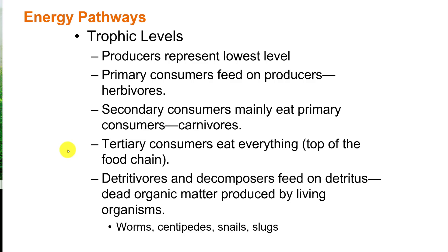To summarize trophic levels: producers represent the lowest level; primary consumers — usually called herbivores — feed on the producers; secondary consumers mainly eat the primary consumers and are termed carnivores; tertiary consumers eat everything and are at the top of the food chain. Very important, but not always appreciated, are the detritivores and decomposers that feed on detritus — dead organic matter produced by living organisms — breaking it up into smaller nutrient parts to be available.